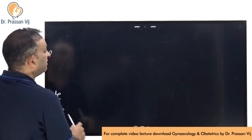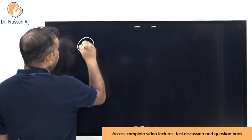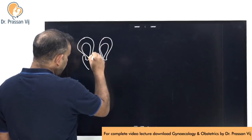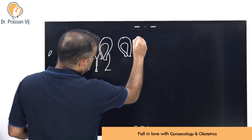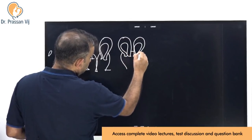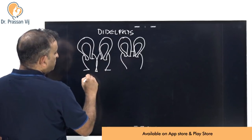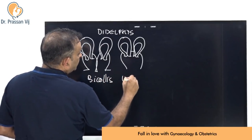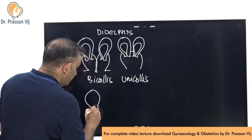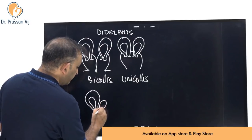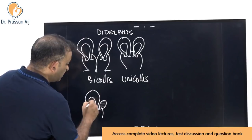In lateral fusion defects, the two ducts have not fused properly. If they have not fused at all, you may see two separate uteruses and two separate vaginas — or two separate uteruses with a common vagina. Both are known as uterus didelphys: bicollis with two vaginas, and unicollis with a single vagina. If only one half of the Müllerian duct formed a uterus and the other made nothing, that is a rudimentary horn with a unicornuate uterus.